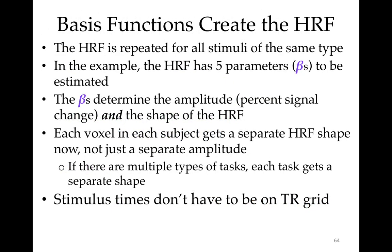The basis functions create the hemodynamic response function — both its shape and size. The HRF is used for all stimuli of the same type. In this example, the HRF has five parameters to be estimated. The betas determine amplitude (a bigger beta means the whole curve goes up) and shape (a big beta early and small beta late means the response dies off faster). Every voxel in every subject gets a different HRF shape, not just a separate amplitude. In AFNI, stimulus times don't need to be on the TR grid — the tent shape accommodates that.